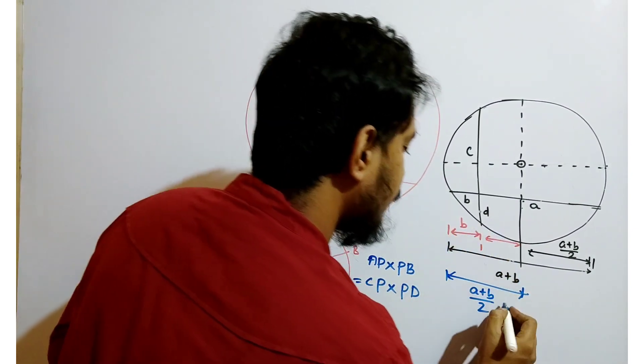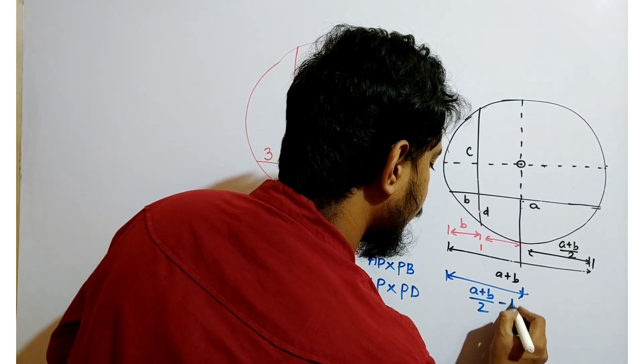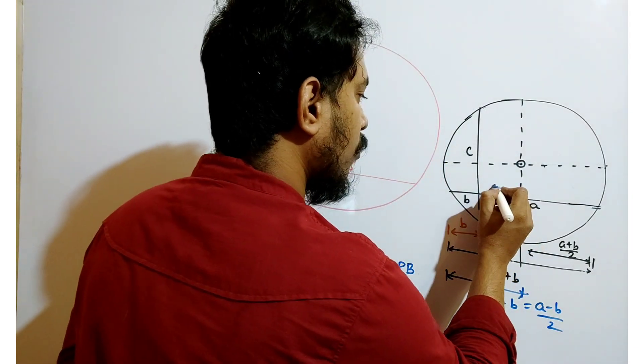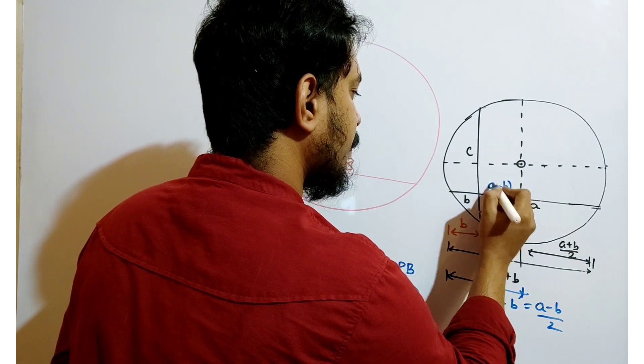And this length is B. So what will be the length of this portion which is equal to A minus B by 2? So length of this portion is A minus B by 2.